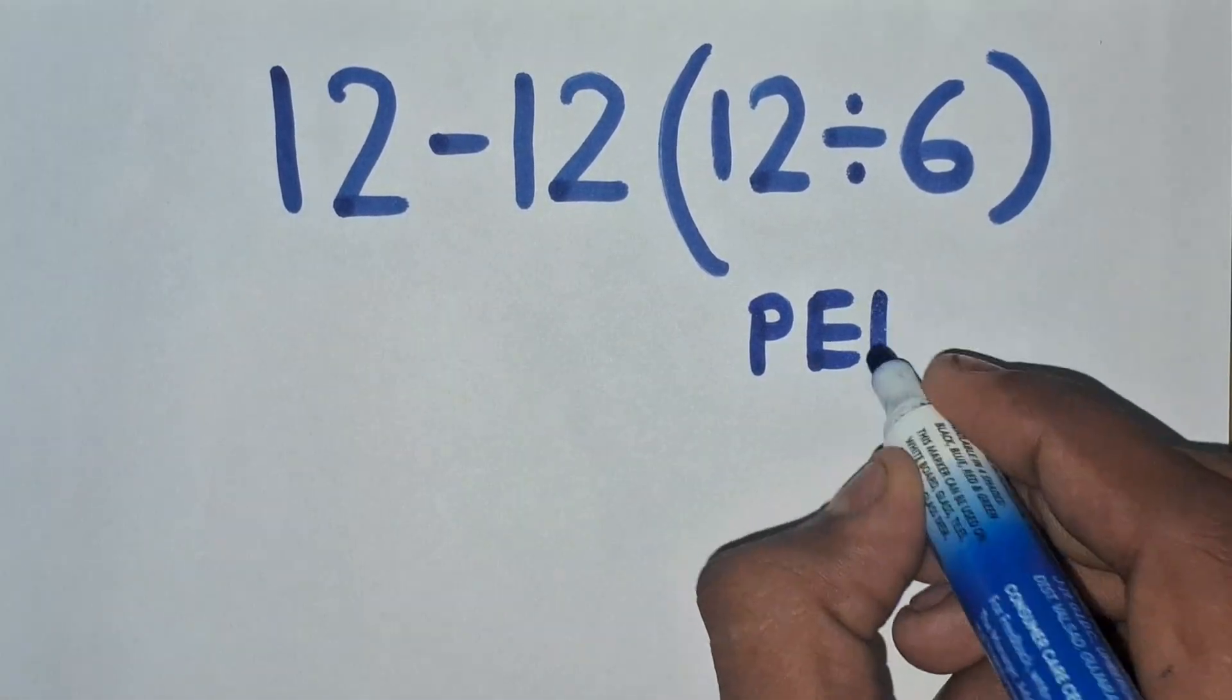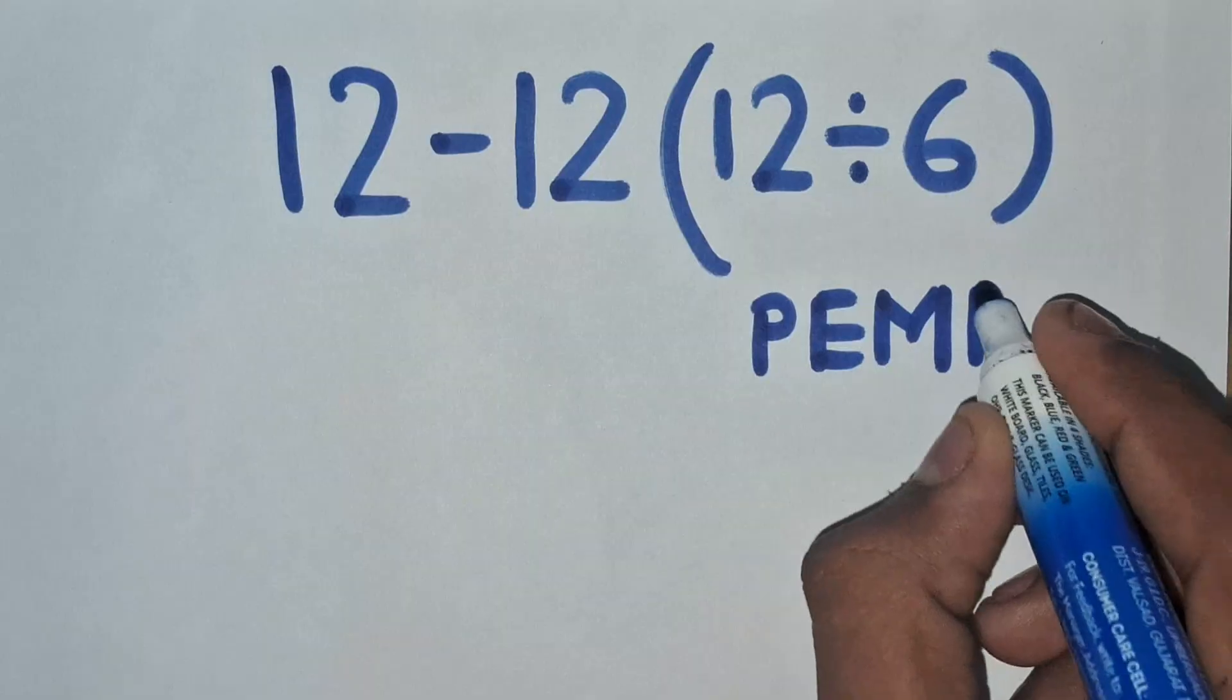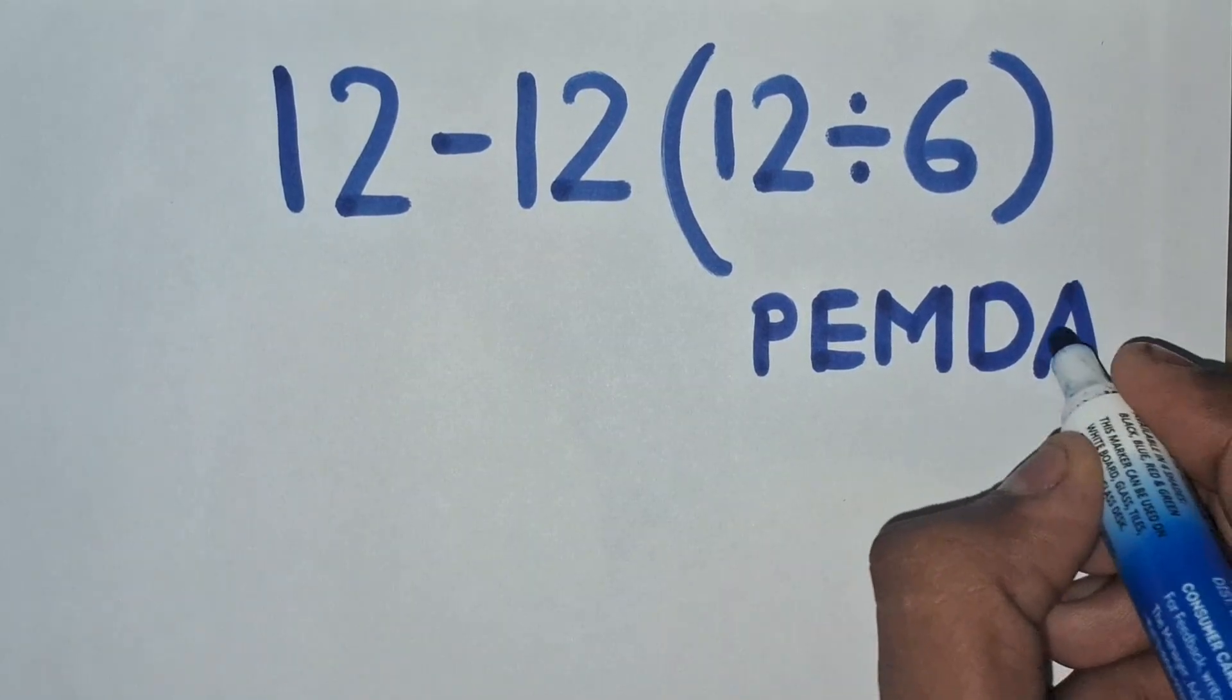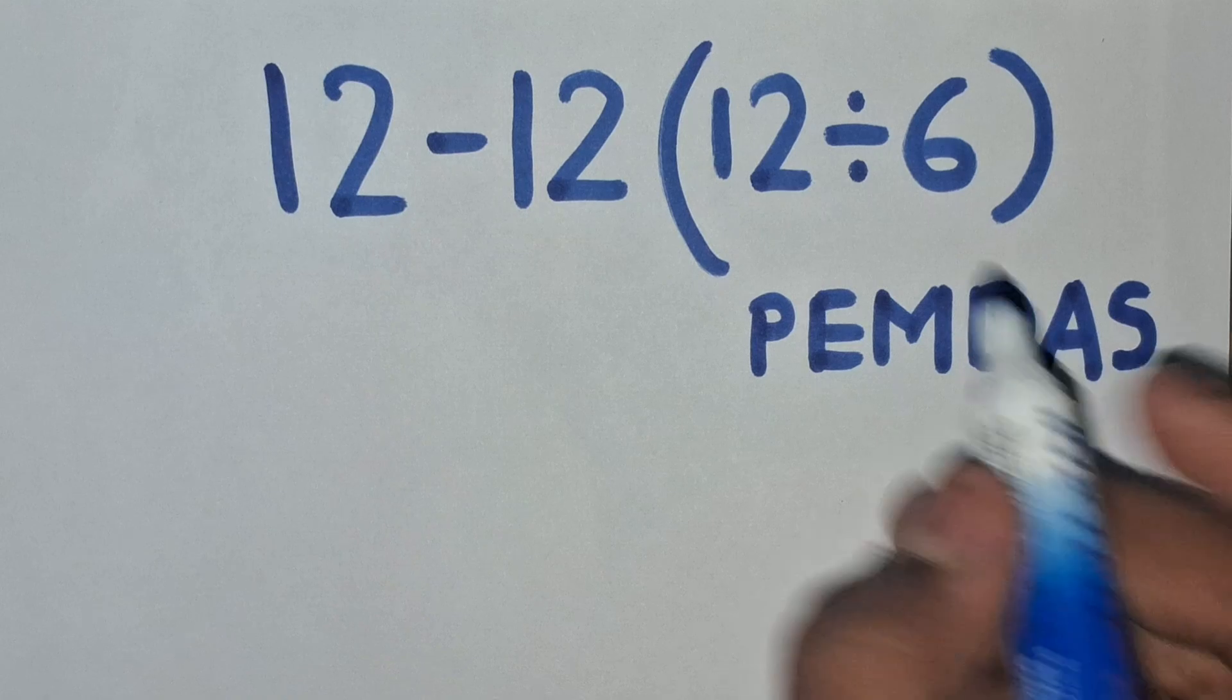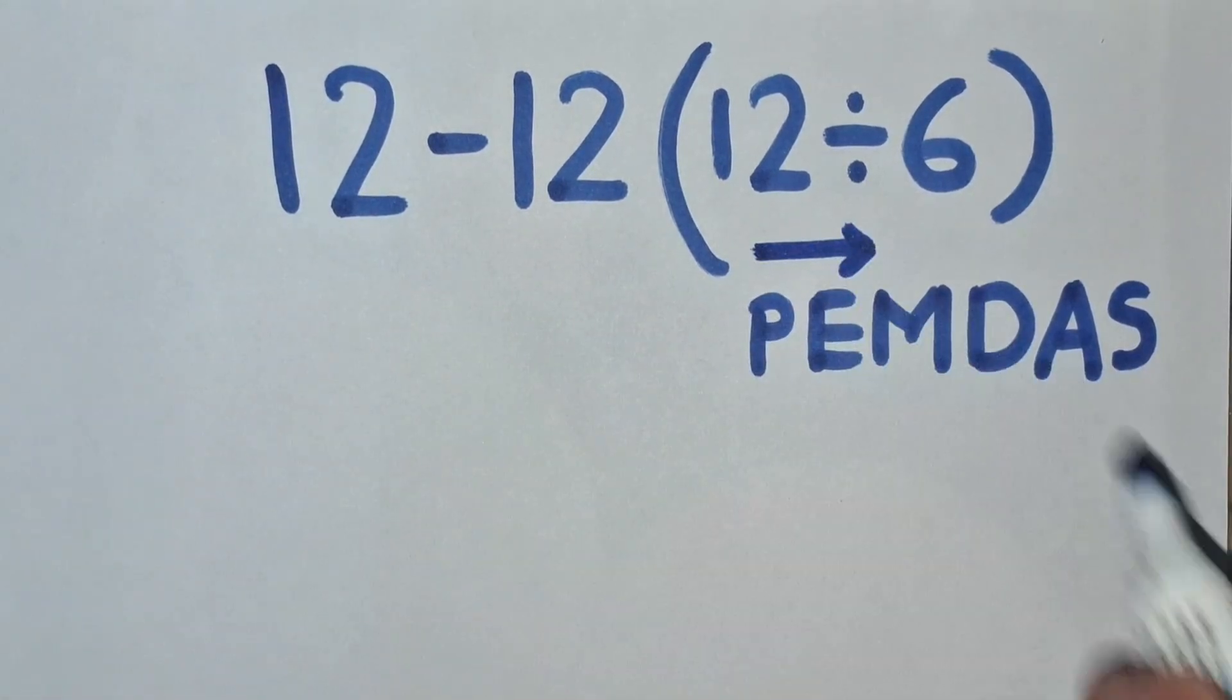This is called PEMDAS, where P stands for parentheses, E for exponents, M and D stand for multiplication and division, and A and S stand for addition and subtraction. We have to solve them from left to right.